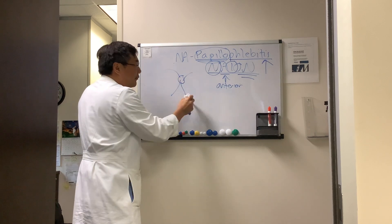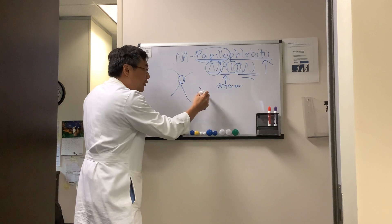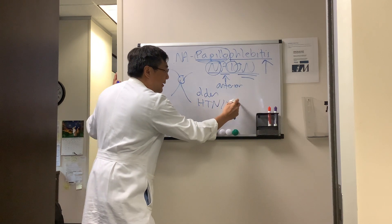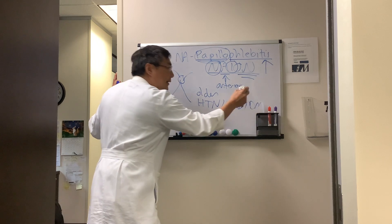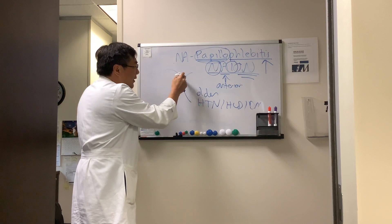And so, in non-arteritic anterior ischemic optic neuropathy, you have a vasculopathic older patient with the usual risk factors: hypertension, hyperlipidemia, diabetes, etc. It causes a localized ischemia that produces swelling of the optic nerve.